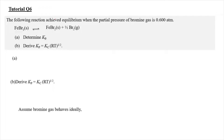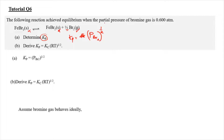For tutorial question 6, the following reaction achieves equilibrium when the partial pressure of bromine gas is 0.6 atm. We have FeBr₃ solid converting to FeBr₂ solid and half Br₂ gas. Our Kp equals the partial pressure of Br₂ to the power of one-half — we only include the gaseous phase and ignore the two solids. Since the partial pressure of Br₂ at equilibrium is 0.6, we get Kp = (0.6)^½ = 0.775. Units are ignored as Kp is treated as dimensionless.